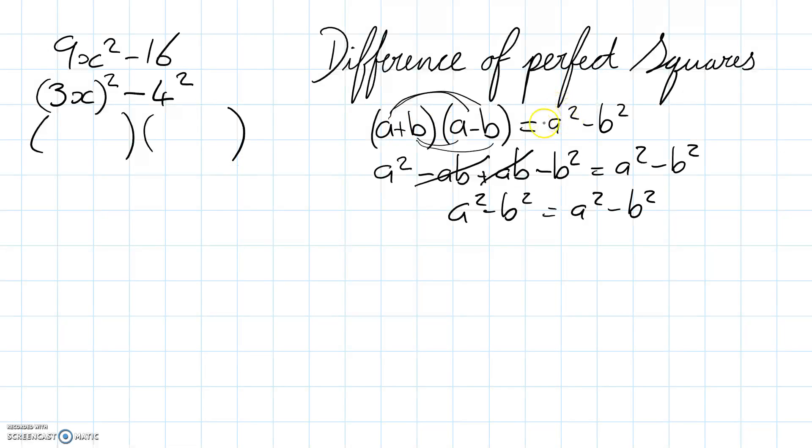Well, our first term a² is 3x, and then we're going to have minus b² so we're going to have a minus 4, and 3x plus 4.